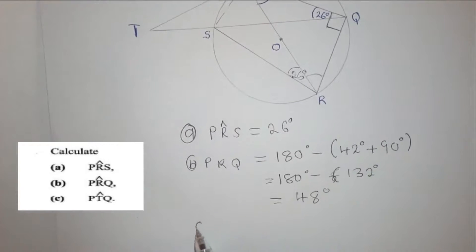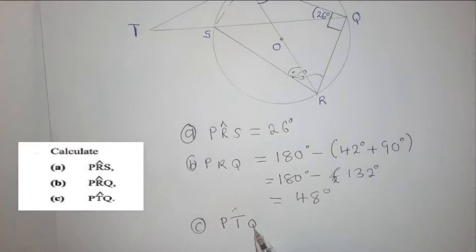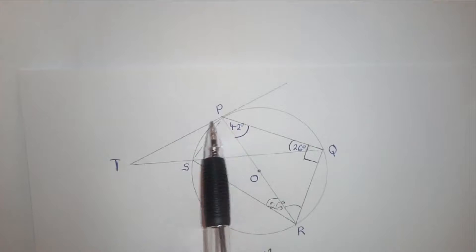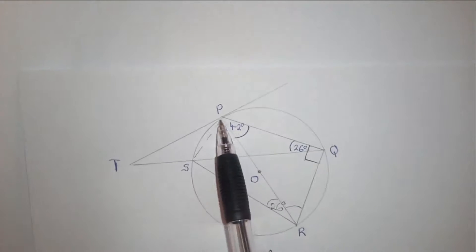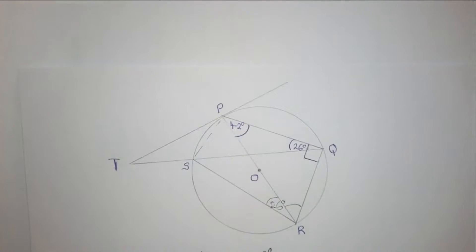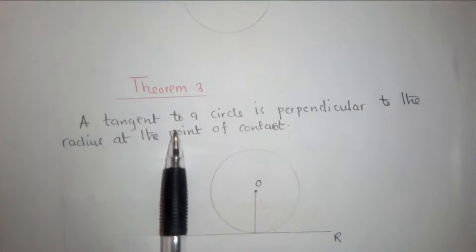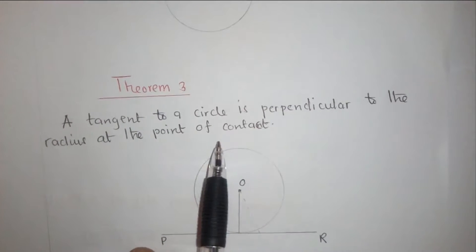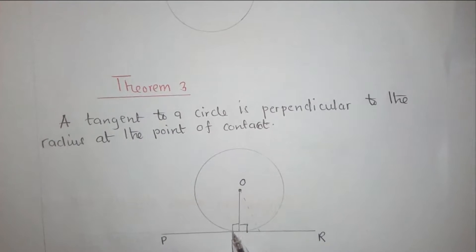Moving to part C, they say find angle PTQ. For this we are going to use Theorem 3: since a tangent is involved, a tangent to a circle is perpendicular to the radius at the point of contact. This means the distance from the center to the tangent point is the radius, and the angle between the radius and the tangent is 90 degrees.